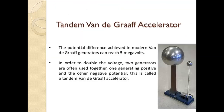The Van de Graaff generator can produce a very high potential. It can achieve a potential of up to 5 MV, which is a very large potential. To double the potential, we need to add another generator.